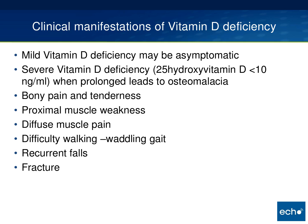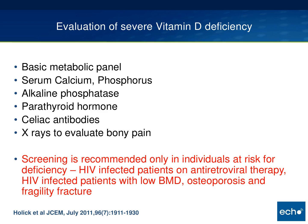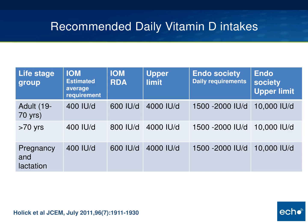Mild vitamin D deficiency may be asymptomatic. Severe vitamin D deficiency—when levels are less than 10 nanograms per ml and prolonged—can lead to osteomalacia with bony pain, tenderness, proximal muscle weakness, diffuse muscle pain, recurrent falls, and fractures. In these patients, it's important to check a basic metabolic panel, alkaline phosphatase, PTH, and look for any malabsorption issues like celiac disease. Screening for the general population is not recommended, but is recommended for HIV patients on antiretroviral therapy and those with low bone density, osteoporosis, or fragility fractures.